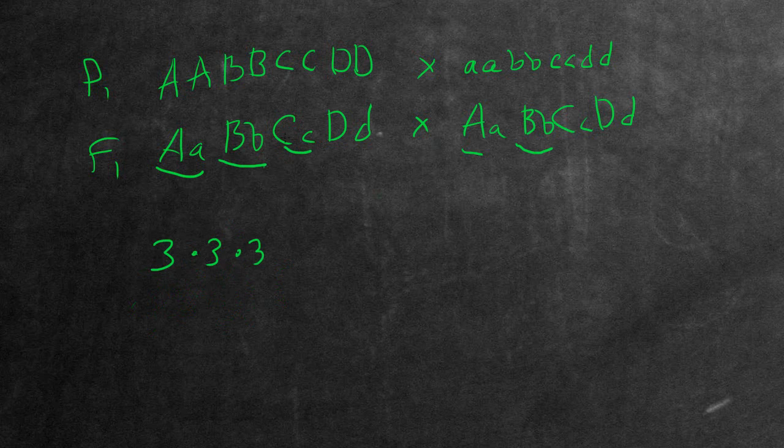So we have three, and we're multiplying it by another three to account for the B here. Then we do it for C, because the big C and little c are going to be crossed with the other big C and little c, giving you three other different types of genotypes. And then do it again for D. Three times three is nine. Nine times nine is 81. So there's 81 different types of genotypes.